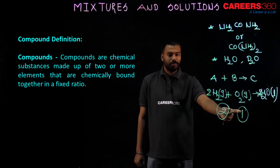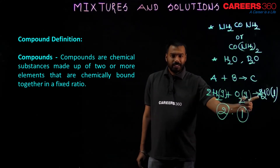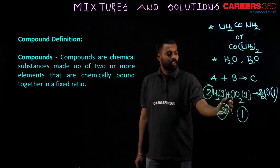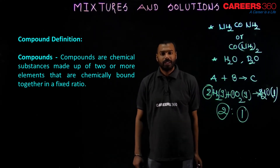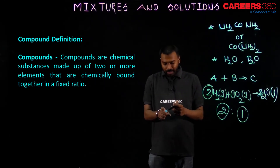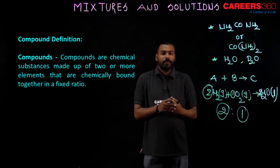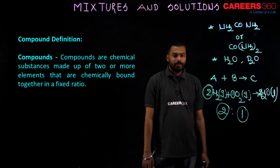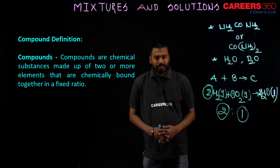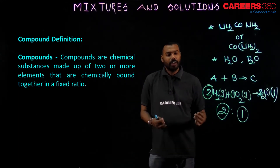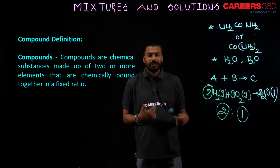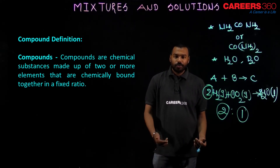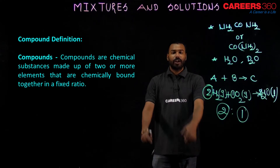I hope you understand the meaning of ratio. You first balance the equation, then check the coefficients — here it is 2:1. So when elements combine in a fixed ratio, a compound forms. That compound has different properties from the reactants. Let me also say it is not always totally different — sometimes a few properties will match, but sometimes they are totally different. Compound also has many types.